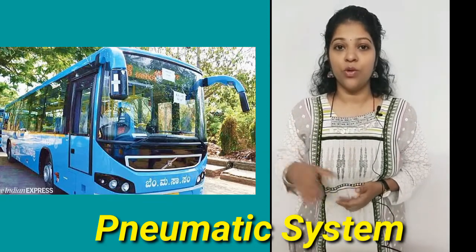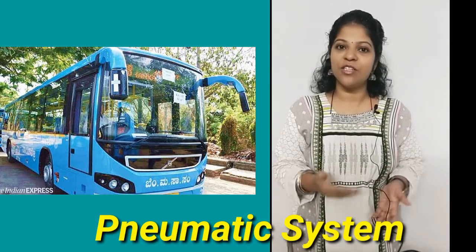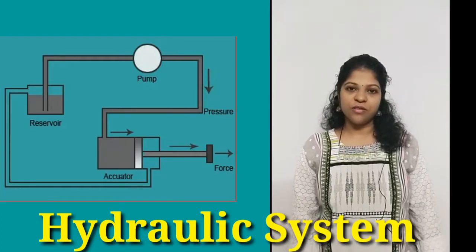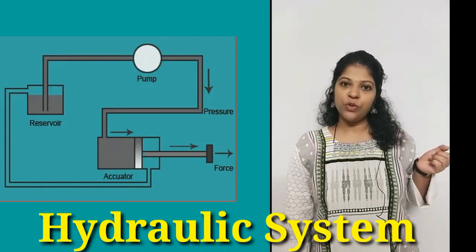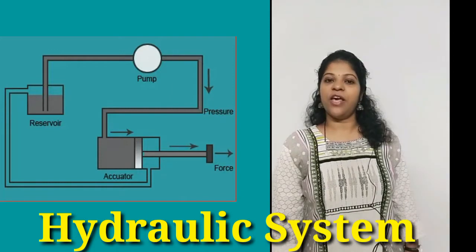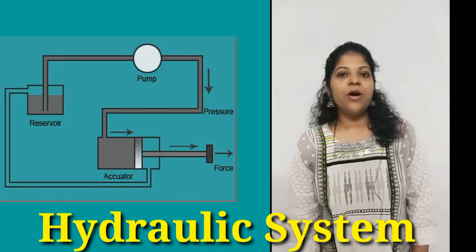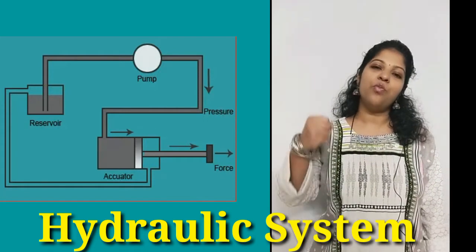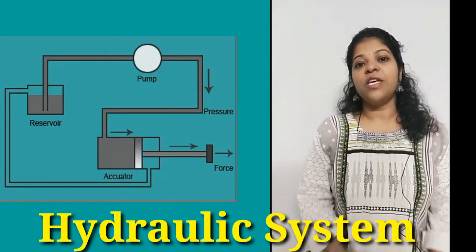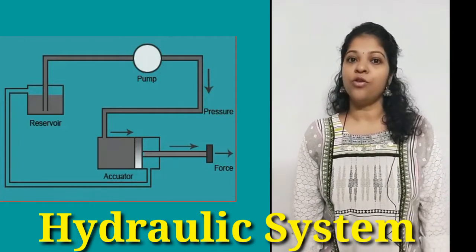Chapter two is the hydraulic system. While pneumatic systems use air as the medium, hydraulic systems use oil instead. Why oil and not air? Because hydraulic systems are the most powerful systems available. If you want to lift heavy objects, hydraulic systems are the most viable solution — more powerful than electrical systems and even pneumatic systems.